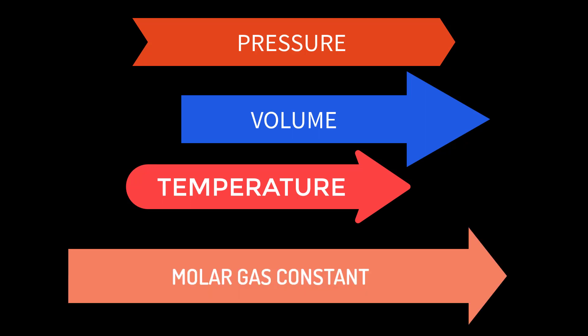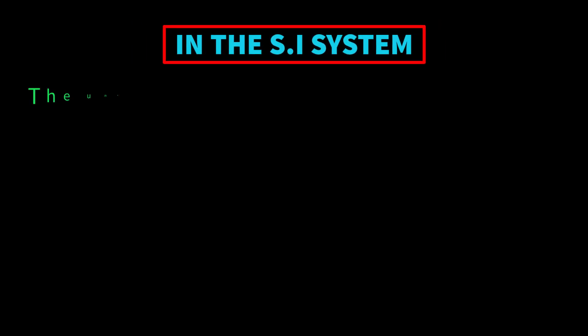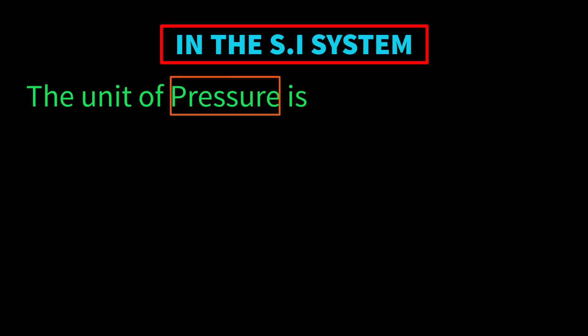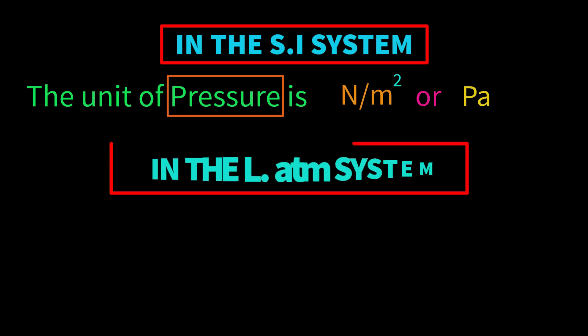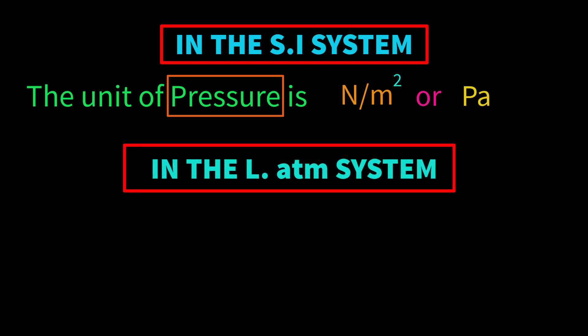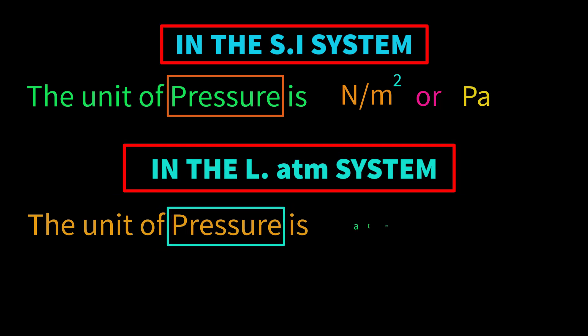These quantities have different units in different systems. For example, in the SI system the unit of pressure is Newton per meter square or Pascal, but in the liter-atmosphere system the unit of pressure is ATM. When we read a stimulus, we see that different units are used for different quantities.